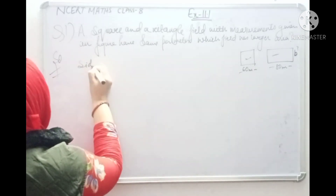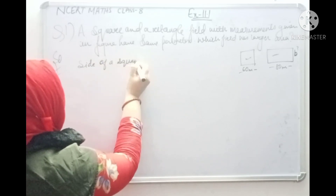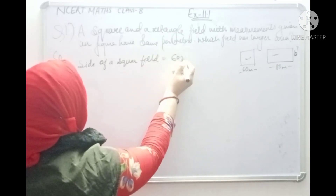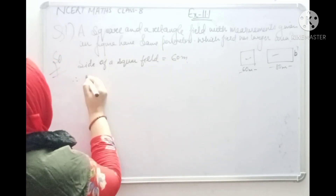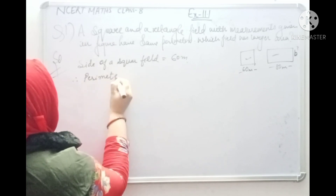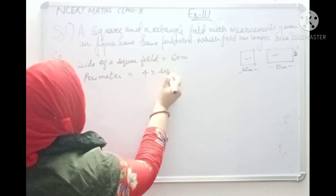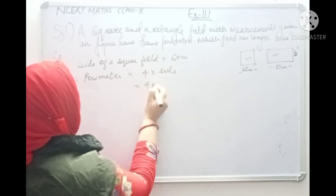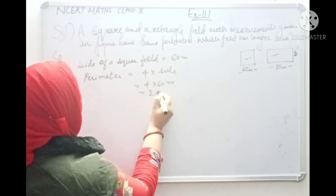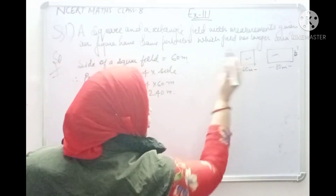First of all, the side of the square field is 60 meters. Therefore, the perimeter of the square is 4 into side, that is 4 into 60 meters. 4 sixes are 24, so 240 meters is the perimeter of this square field.